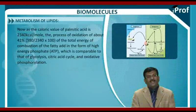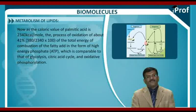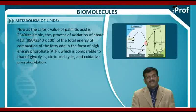As the calorific value of palmitic acid is 2340 kilocalories per mole, the process of oxidation captures about 41% of the total energy of the combustion of the fatty acids in the form of high-energy phosphate, that is ATP, which is comparable to that of glycolysis, citric acid cycle, and oxidative phosphorylation.